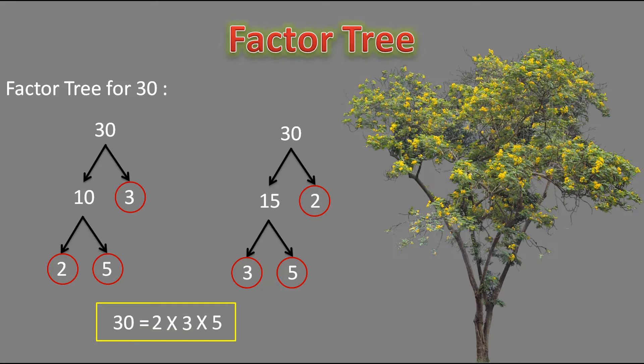I think you all have understood factor tree. Now we have one more method to find prime factorization — this method is often used and is especially useful for bigger numbers. I will take the number 236. To use this method, we write the number, draw a vertical line and horizontal line in front of it. We must also know the divisibility rules of prime numbers — I have made a video on divisibility tests, the link is in the description.